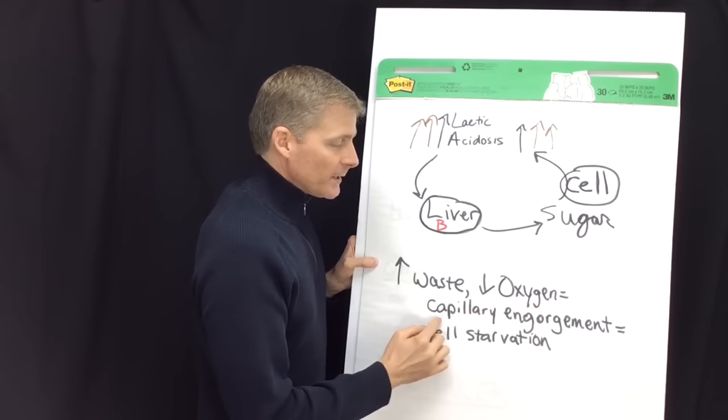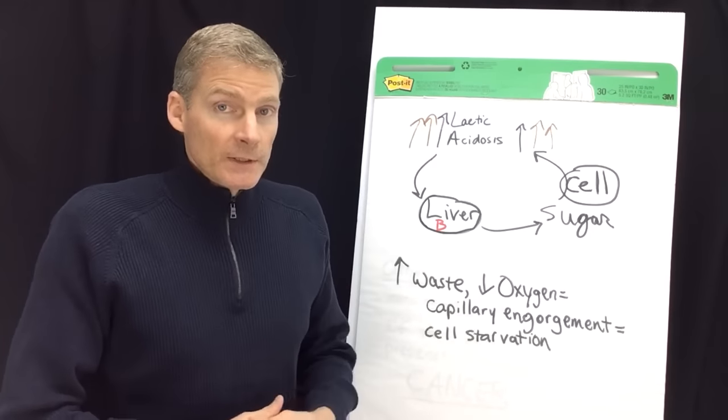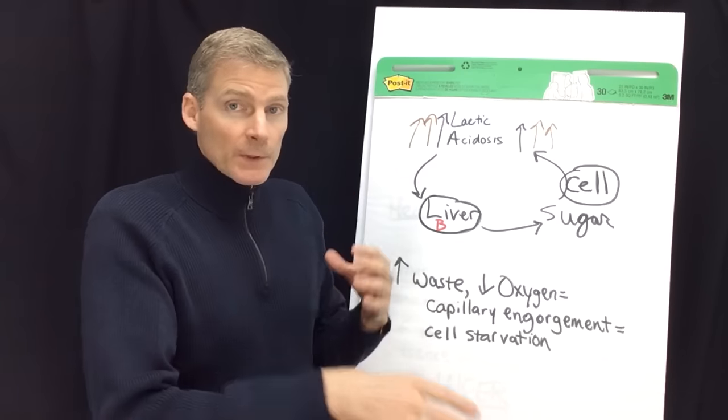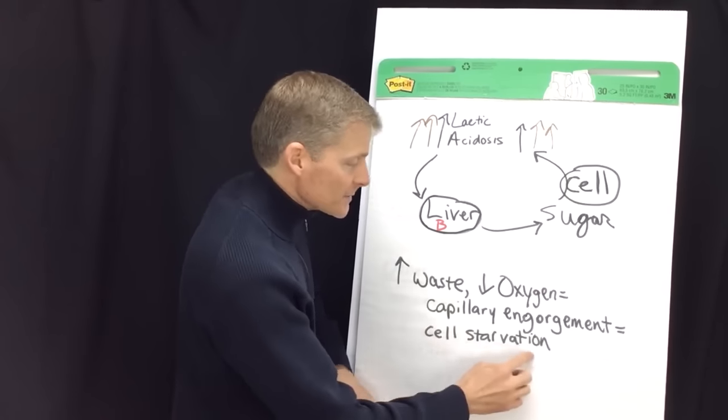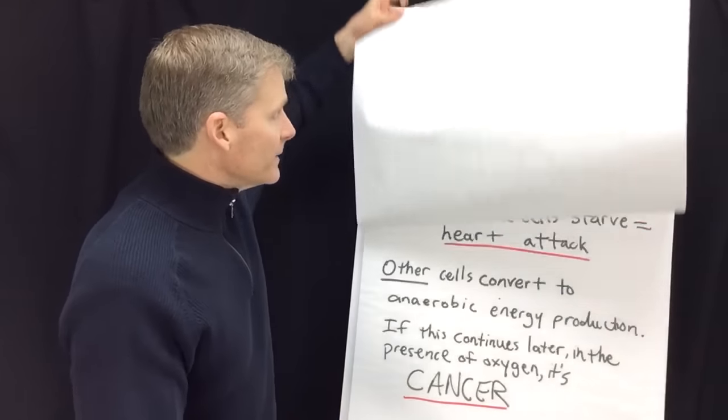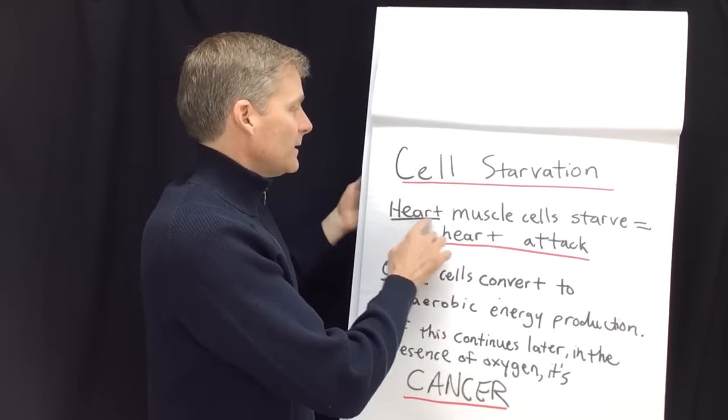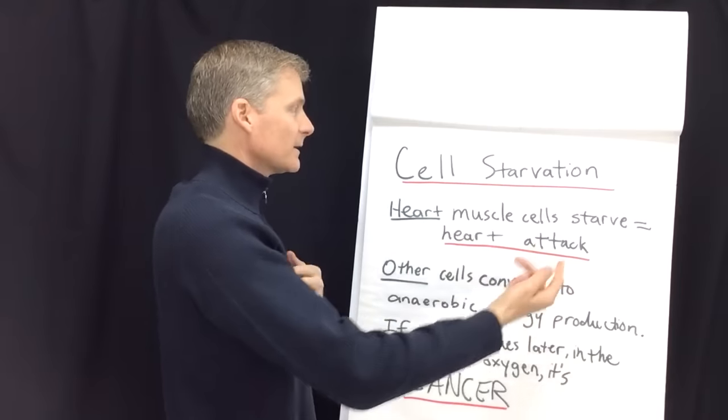You get increased waste, decreased oxygen, capillary engorgement, and then cell starvation. The cells aren't getting nutrients and they can't dump their waste into the blood because the blood is already very toxic. So now cell starvation, that's key right here. If the heart muscles are starving, you get a heart attack. Heart muscles, when they starve and die, they tighten up.